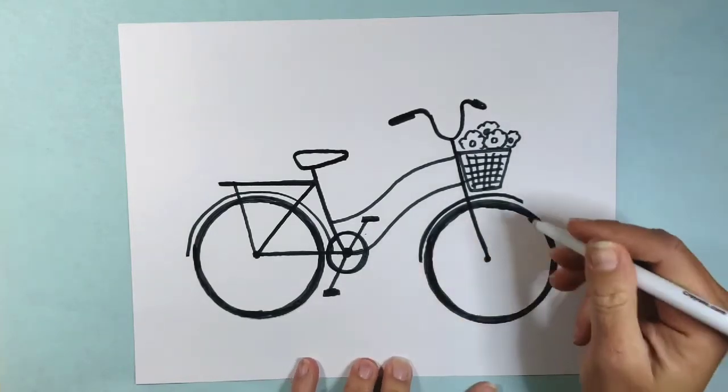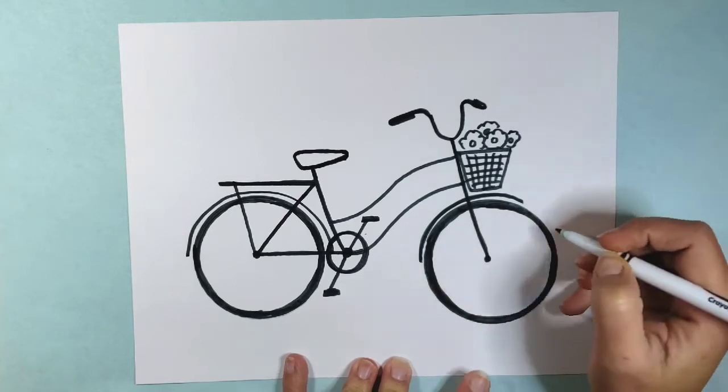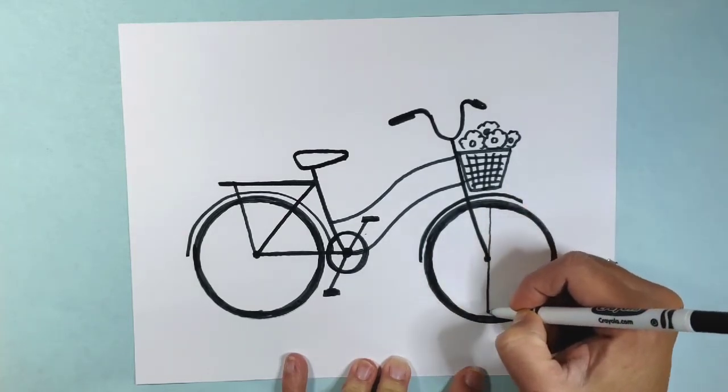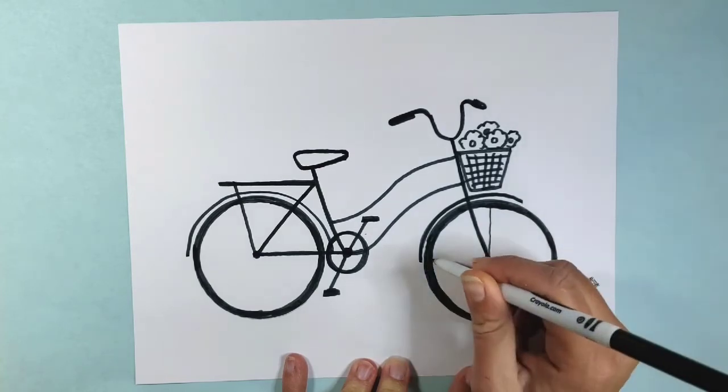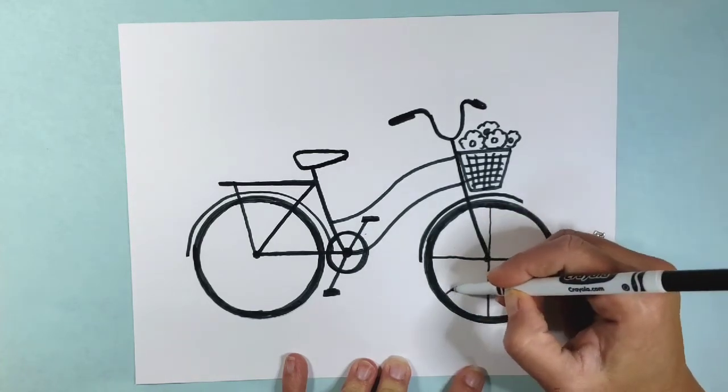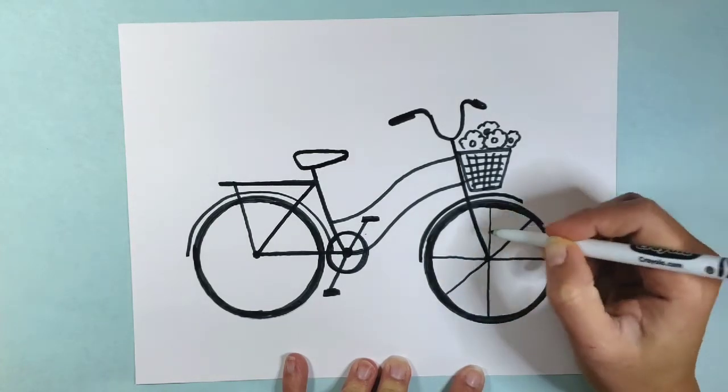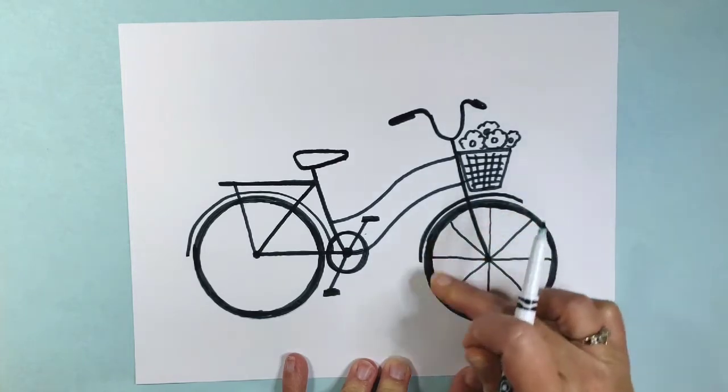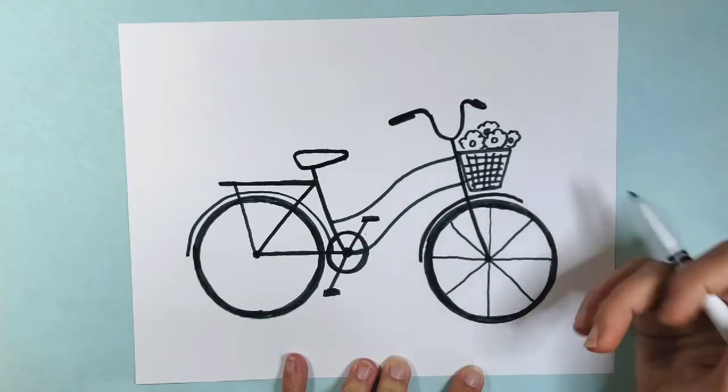So to add the little spoke lines to the wheels, I'm going to start with a cross. So vertical line and a horizontal line. And I'm going to pretend like I'm cutting pizza. So I'm just going to keep adding some diagonals like this until I've got a nice even thing. It looks kind of like a pizza right now.